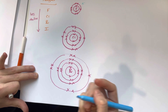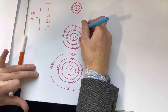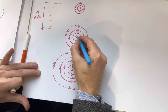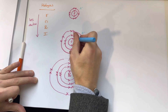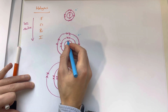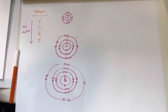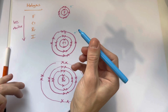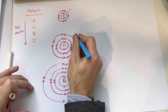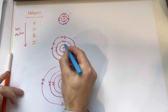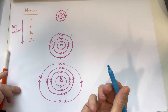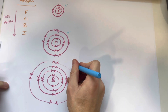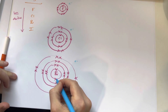If we go down to chlorine, the incoming electron is further away from the nucleus because there are more shells — so there's a bigger distance. But there's also an extra shell in between, which means there's more shielding. Shielding means the electron is being shielded from the attraction of the nucleus. And going further down to bromine, the incoming electron is now really far away.